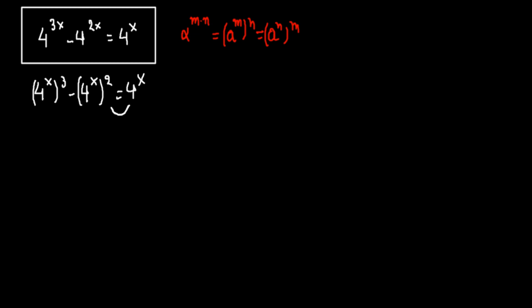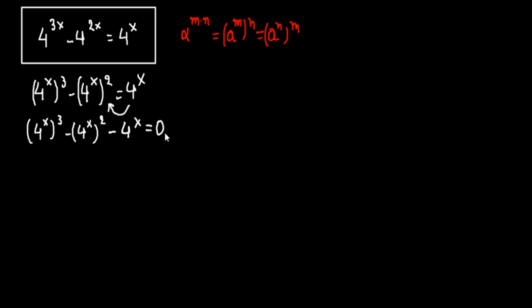We bring everything to this side, so we have 4 to the x, all to the third, minus 4 to the x, all to the second, minus 4 to the x equals to zero.